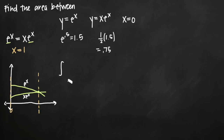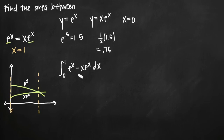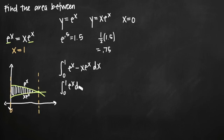Now we can proceed with our area calculation. The area is the integral from 0 to 1 of the higher curve minus the lower curve: the integral from 0 to 1 of e to the x minus xe to the x, dx. To make this easier to calculate, we split it into two integrals: the integral from 0 to 1 of e to the x dx, minus the integral from 0 to 1 of xe to the x dx.